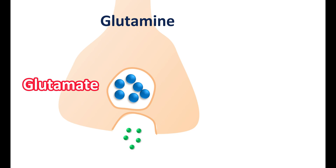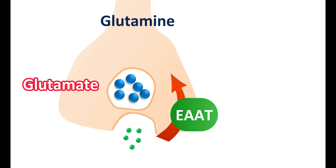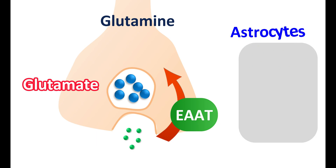The released glutamate can act on post-synaptic receptors, or it can be taken back into the nerve terminal via excitatory amino acid transporters in exchange for sodium. Glutamate can also be absorbed into non-neuronal cells, particularly astrocytes, where it is converted into glutamine by glutamine synthase.